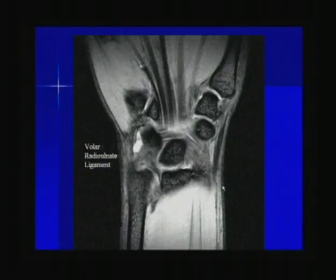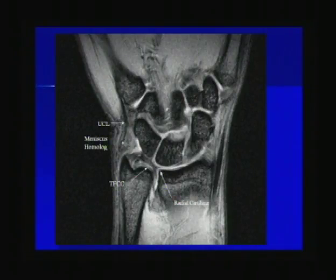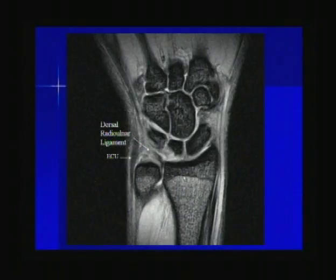On MR, starting volarly, we have the volar radio-ulnar ligament. Moving more dorsally, we come into the actual articular disc, which has a radial attachment site and attaches to high signal intensity radial cartilage — this should not be mistaken for a tear. Along the peripheral site there are two attachment sites: one to the tip of the ulnar styloid and one to the fovea at the base of the ulnar styloid. This is the meniscus homolog — intermediate signal intensity tissue, fairly ill-defined — and here is the ulnar collateral ligament. Moving more dorsally, this is the dorsal radial-ulnar ligament, and we come into the extensor carpi ulnaris tendon and tendon sheath.